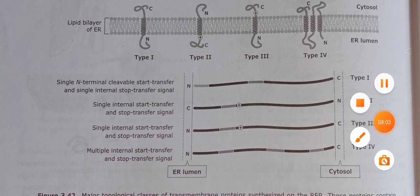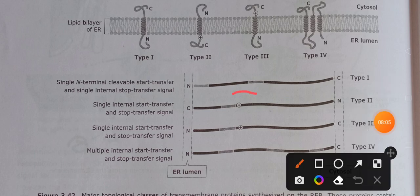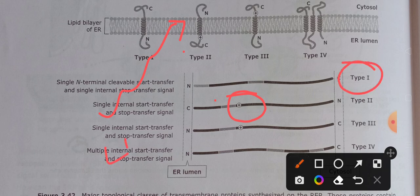Because the positively charged amino acids are on the N-terminal side of the stop-transfer signal sequence in Type 2, the N-terminus ends up in the cytosol. Examples of Type 2 transmembrane proteins include the transferrin receptor and Golgi galactosyltransferase.